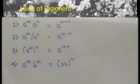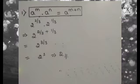Third law: a raised to m, whole raised to n, equals a raised to m into n. Fourth law: a raised to m into b raised to m equals (ab) raised to m.